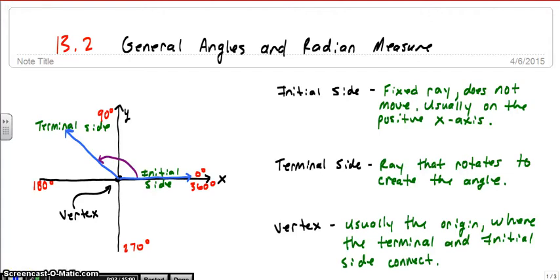This lesson is about general angles and radian measure. We've talked about acute angles before in the previous lesson, and you've talked about obtuse angles in geometry. In this section, we're going to get into angles that are bigger than 90, bigger than 180 degrees, and actually bigger than 360 degrees.